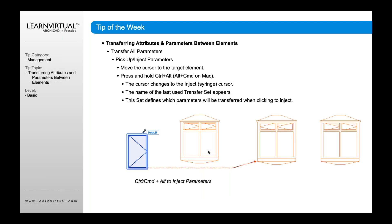If I want to transfer those attributes, I simply drag my cursor over to the edge of another window and hold Command-Option-C, or just click on the syringe. So I press Control-Alt, or Alt-Command on the Mac, and I simply drag my syringe over. It'll highlight again and I transfer those parameters into it.